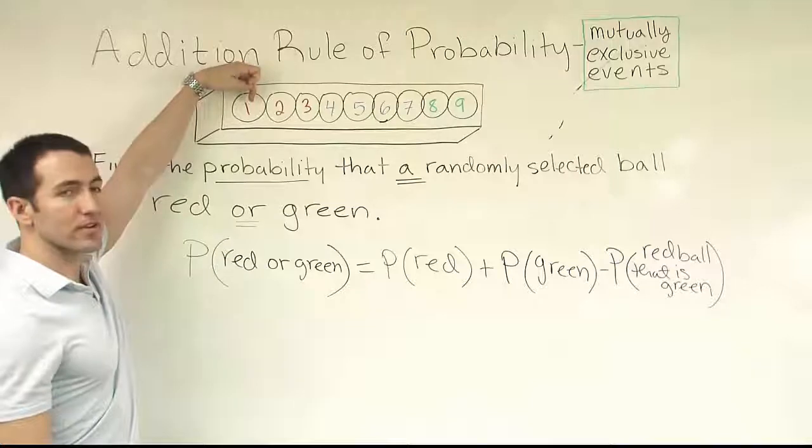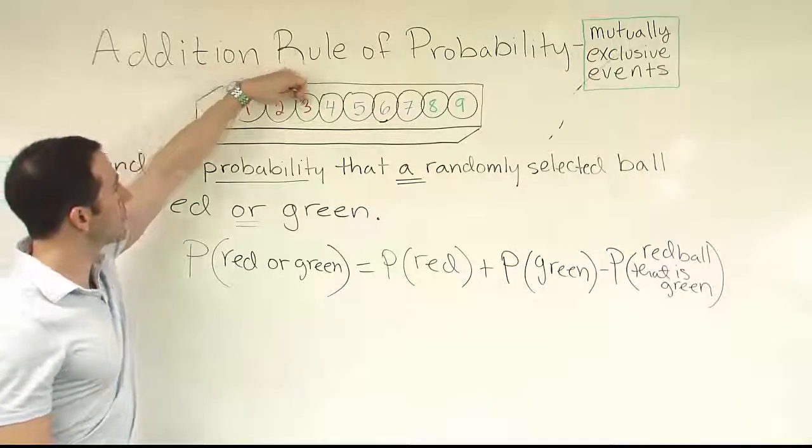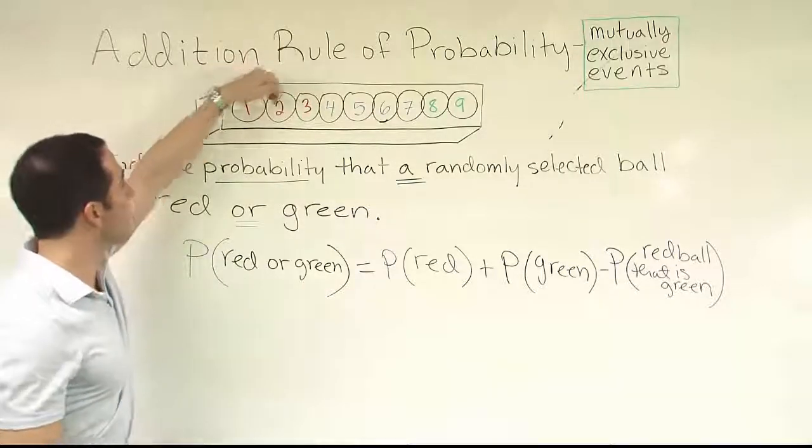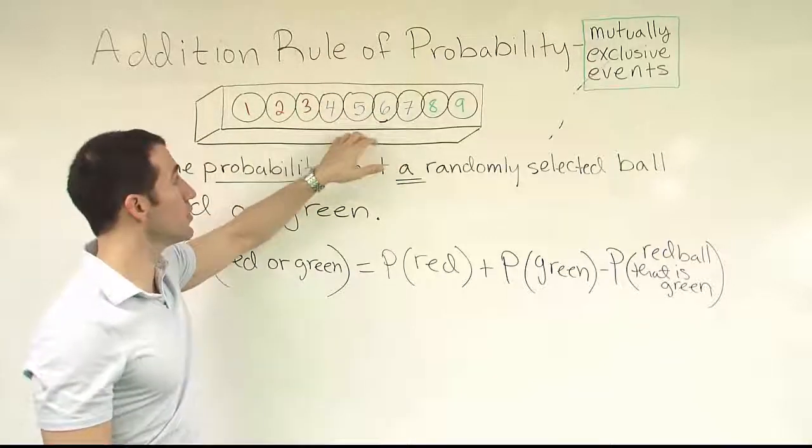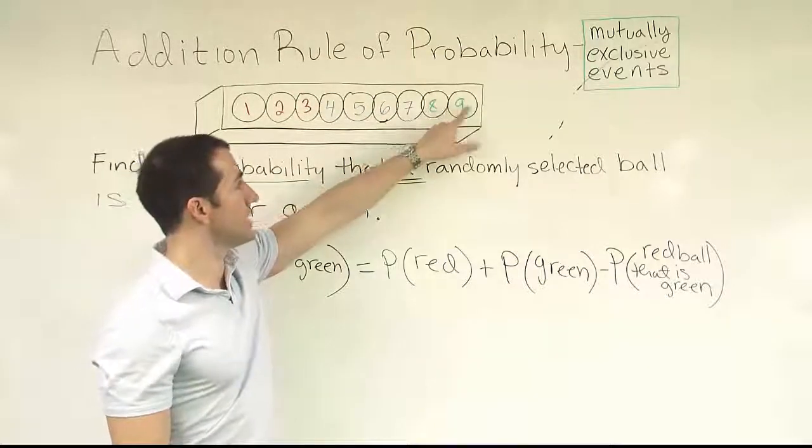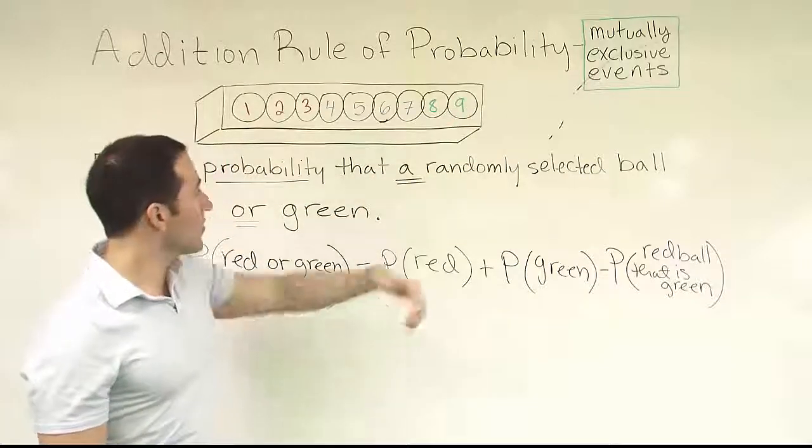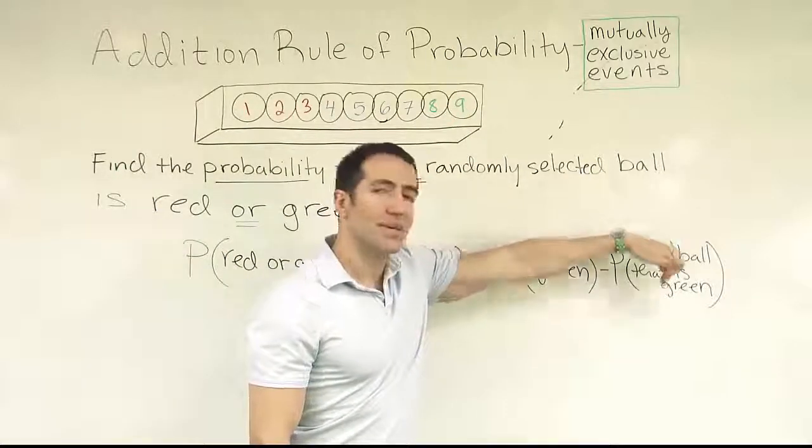Hopefully you'll be able to see these colors at home, but we have one, two, and three. The first three balls are numbered in red. Then we have four, five, six, seven. Those four balls are numbered in blue. And then we have two green balls, eight and nine. So are there any balls here that are red and green at the same time?